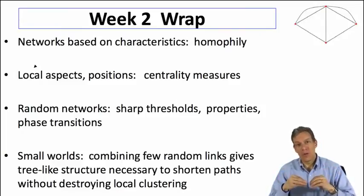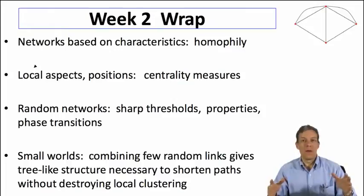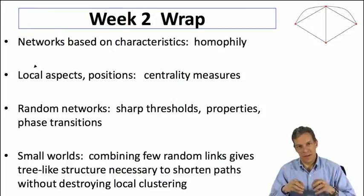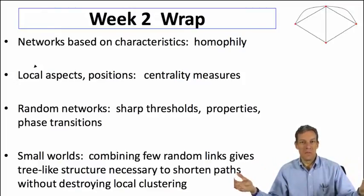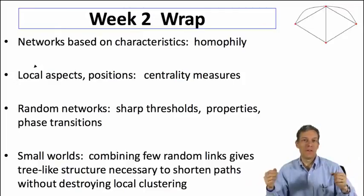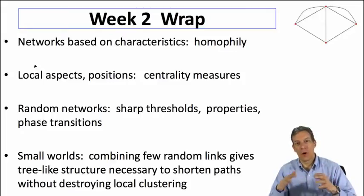Second, when we look locally and try to figure out who in a network might be influential, we're looking at centrality measures. There are many different ways in which we could keep track of a node's position — how close they are to other individuals, how well connected they are to important other individuals, how many connections they have. We went through a whole series of different things, and these all capture different aspects of networks.